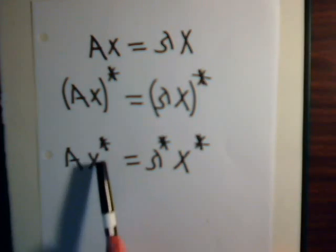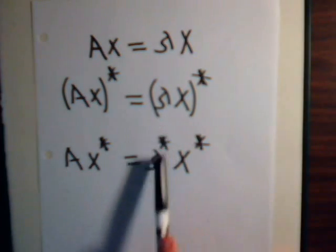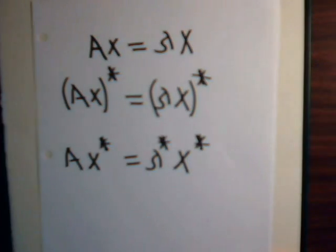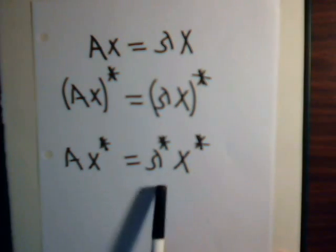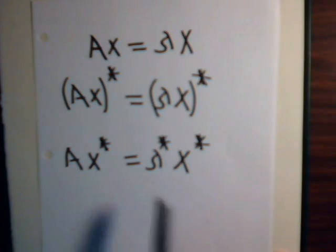But this will be x star and this will be lambda star x star. And this is still now an eigenvector, eigenvalue equation. But notice what we have.